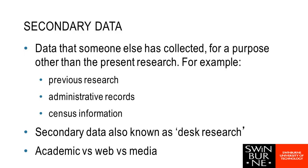A lot of ABS data is available for free online, or for a fee you can get even more detailed census information right down to census collection areas — little blocks of streets within suburbs. So you can find out very detailed information, for example, what suburbs have high concentrations of families, elderly, single people, or particular age groups.